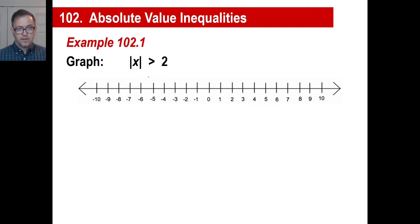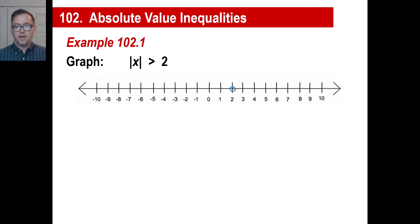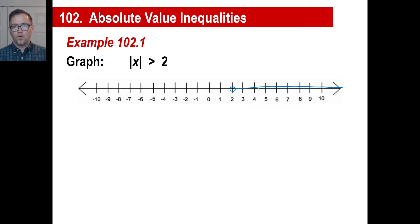The absolute value of x is greater than two. Let's do the easy one first. The absolute value of what number is greater than two? We don't include two itself — if we filled it in, that would mean greater than or equal to two. We just want greater than. Anything to the right of this qualifies. Any number in here, no matter how small, like 2.00001, that still works.